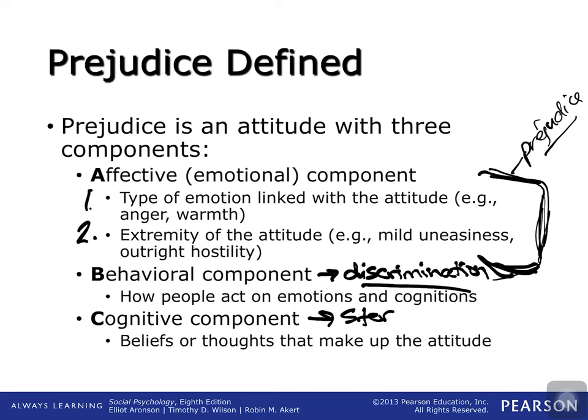The cognitive component is where we get stereotyping. This is your beliefs and thoughts that make up the attitude — for example, thinking that everybody who has a certain hair color is not as smart as others because of people you've known. Maybe you believe a particular group doesn't drive as well or gets in more car accidents. These are the facts you put in your head about a certain group, and this is where stereotypes come from — lumping people together in terms of abilities.